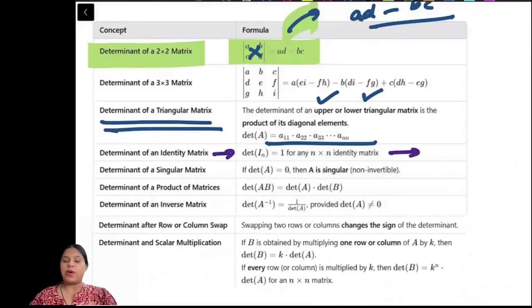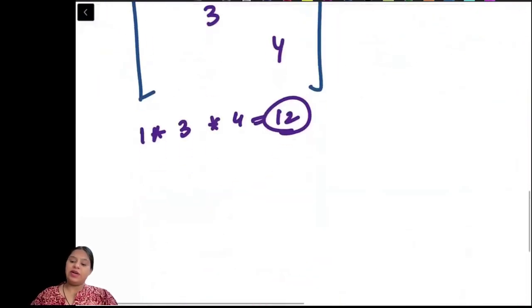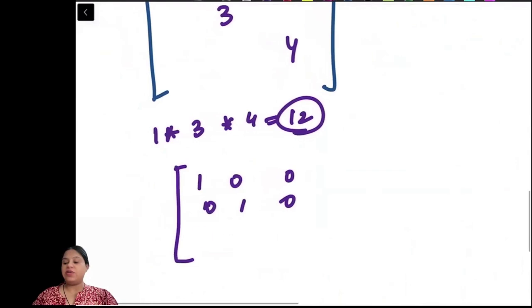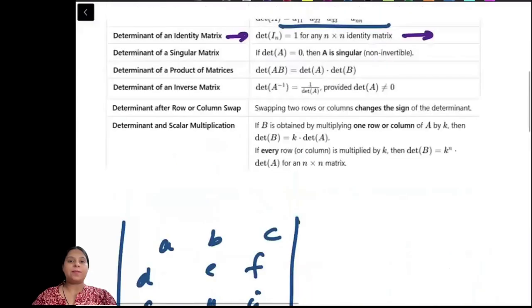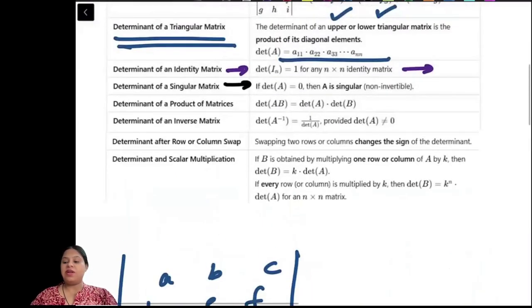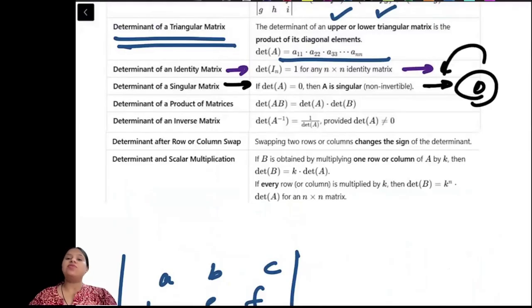The determinant of an identity matrix is 1. As long as it is an identity matrix, it's automatically a triangular matrix, so its determinant is the product of diagonal elements, which is 1. Any matrix whose determinant is 0 is called a singular matrix, and it is non-invertible.